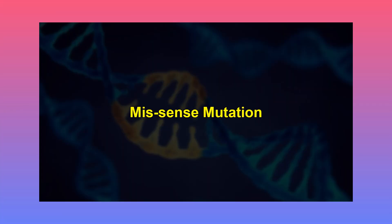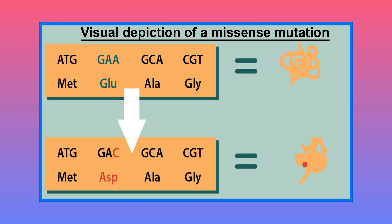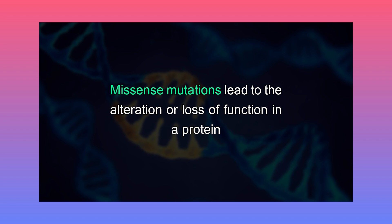A base change that converts one codon into another codon is called a missense mutation. A codon originated from a nucleotide change will code for a different amino acid. Many missense mutations are silent because the encoded amino acid remains the same, or the amino acid substitution is sufficiently subtle so as not to compromise activity of the enzyme. Missense mutations that have a marked effect often lie in the active site or grossly disrupt protein folding, and can lead to the alteration or loss of function in a protein.